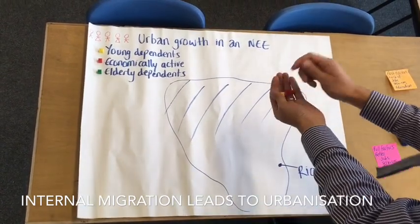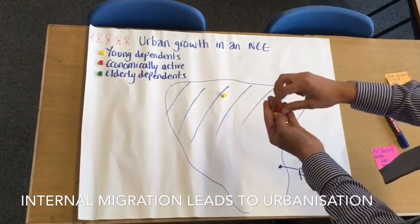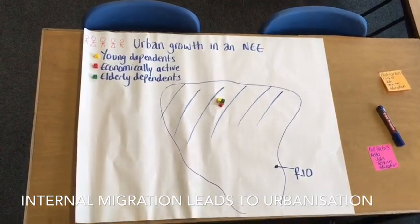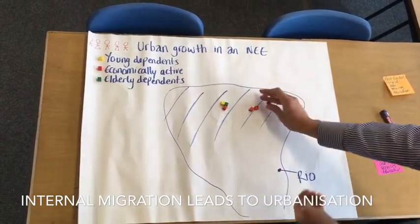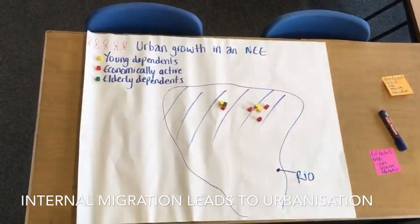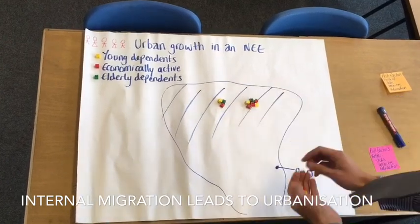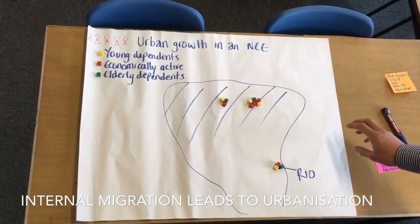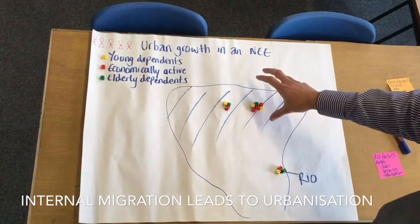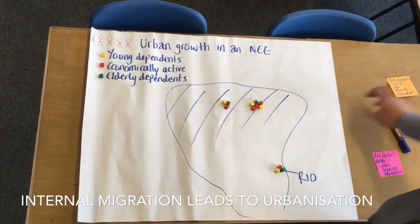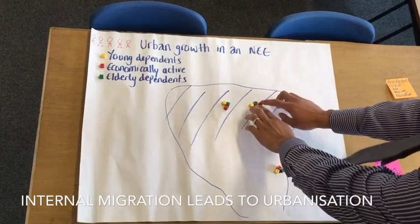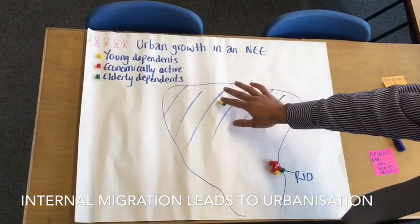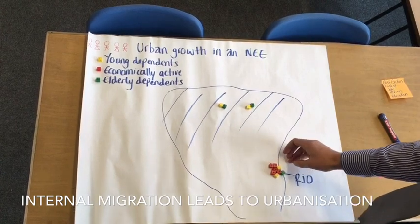I'm going to put a couple of places up here — some young dependents, some economically active, and some elderly dependents in a small settlement. There's another small settlement with some economically active, some young dependents, and an elderly dependent, and down here there's a small population in Rio. The first cause of urban growth is migration, so it's generally the economically active that move, and sometimes they take their young dependents — their children — with them.